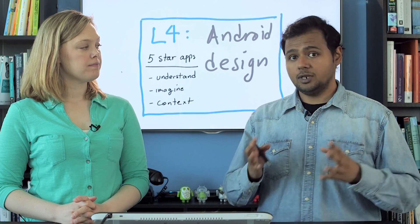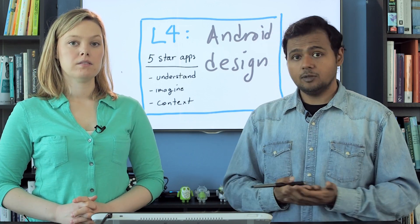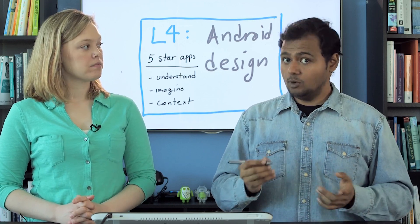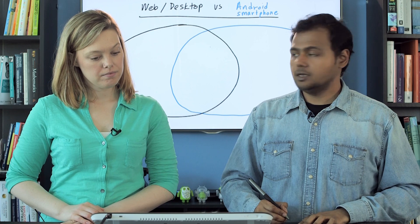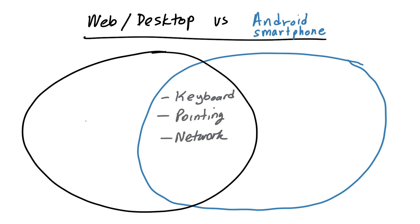Now, before we get into the details of what context is made up of, you're probably a web and desktop developer. So let's talk about the differences between the Android platform and web and desktop. There are some fundamental similarities between web, desktop, and mobile machines — after all, they collect data from input sources, they process that information, and they produce output. So what are some of the inputs that are similar between web, desktop, and Android? Well, they both have keyboards, and you can enter information that way. They also both have pointing devices, and they both have a network connection.